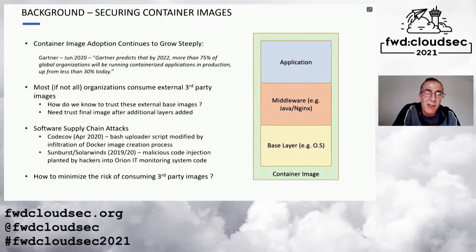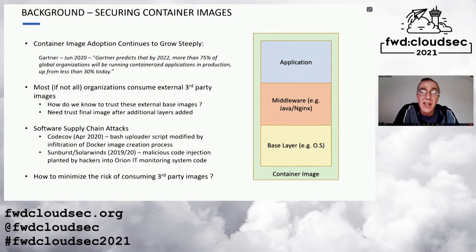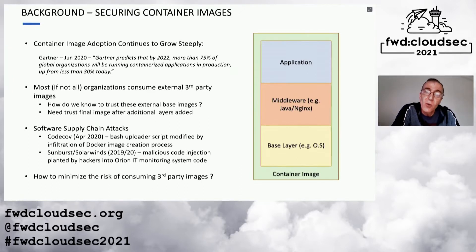Just to provide a little background: as we know, the adoption of container images continues to grow exponentially. A report from Gartner recently indicated that by the end of next year, more than 75% of global organizations will be running some applications in a production environment. Most, if not all of those organizations will be consuming external third-party images. So how do we know we can trust these images?